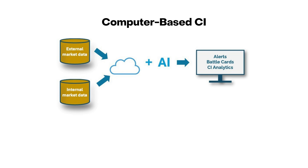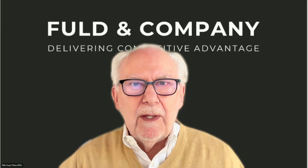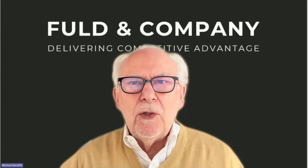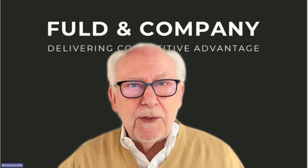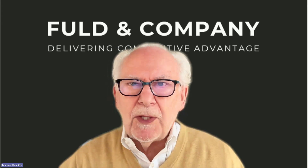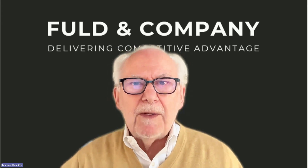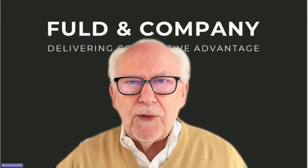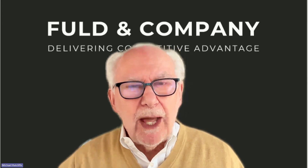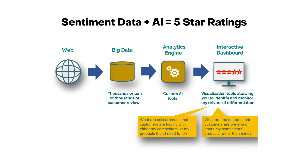Over the past 10 to 20 years, the use of computers to do research and collect data on companies has become mainstream. As AI tools have improved, software programs have made leaps and bounds in their ability to help with analysis. They can help identify trends over time, look for changes in web pages and online prices. And if there are databases of conversations with clients and hence potential references to competitors, computers can be used to pull these out using AI and large language models. They can also be used to analyze sentiment data on specific products or services.